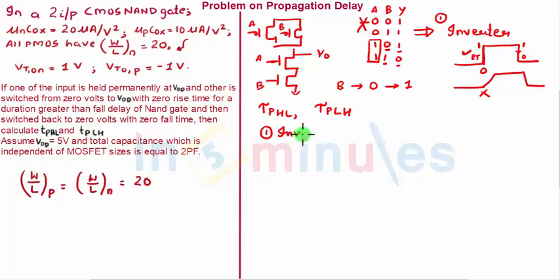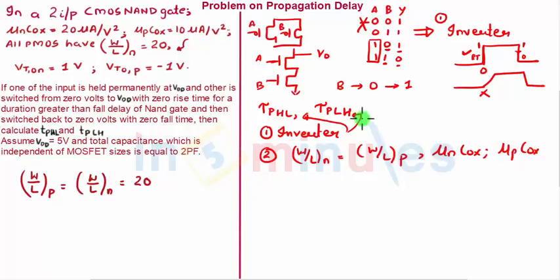So what you need to understand here is first that this is nothing but an inverter now. We have already found the formula for propagation delay for inverter, so we can use that. The second thing they have given us is W by L of nMOS and pMOS is already given to us.